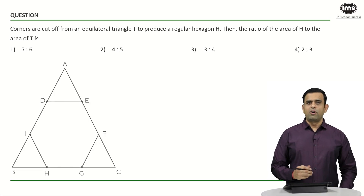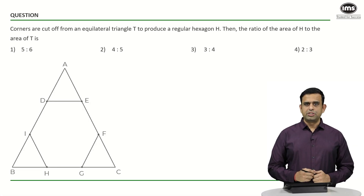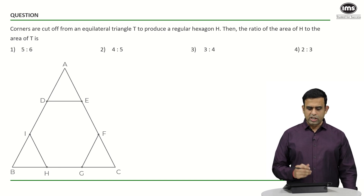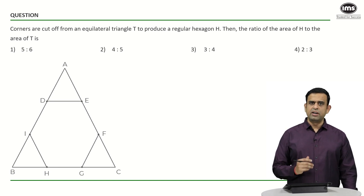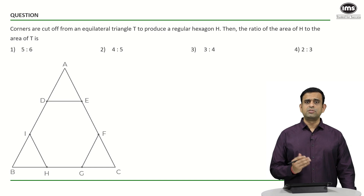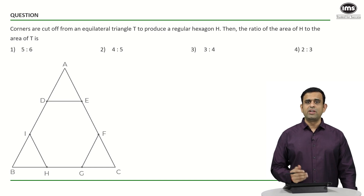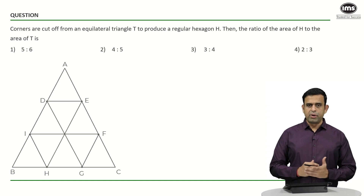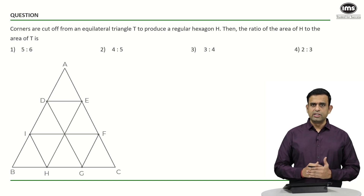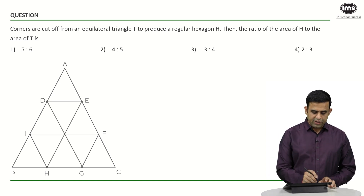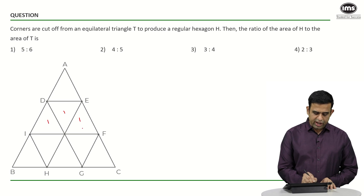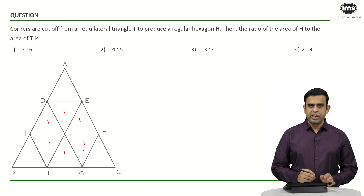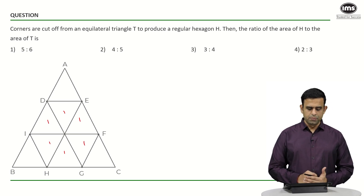Let us look at another method without assigning any specific side length. A regular hexagon comprises six equal equilateral triangles. If we join diagonals DG, FI, and EH, the hexagon is divided into six equal triangles.